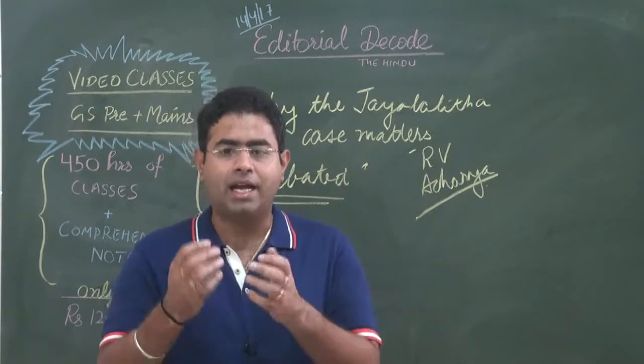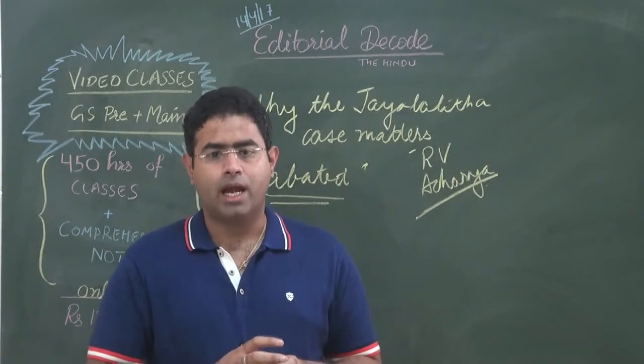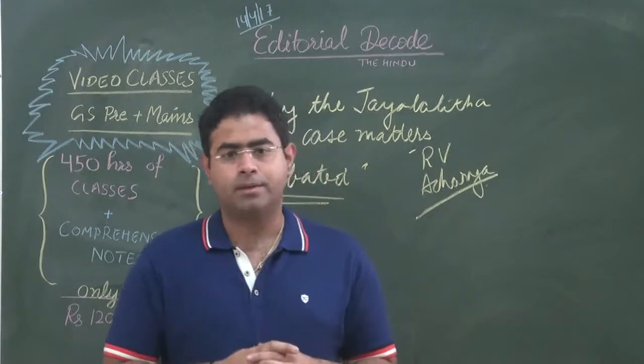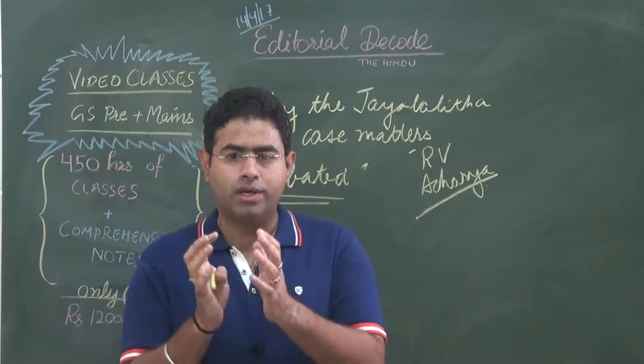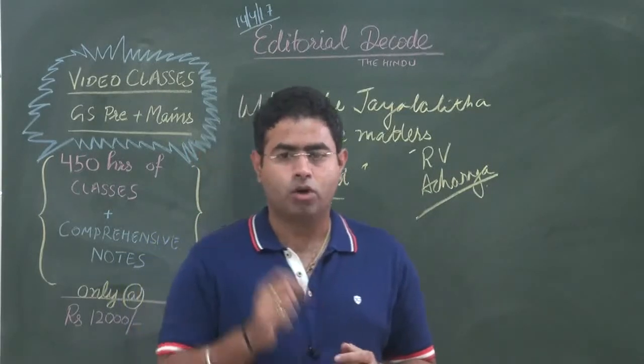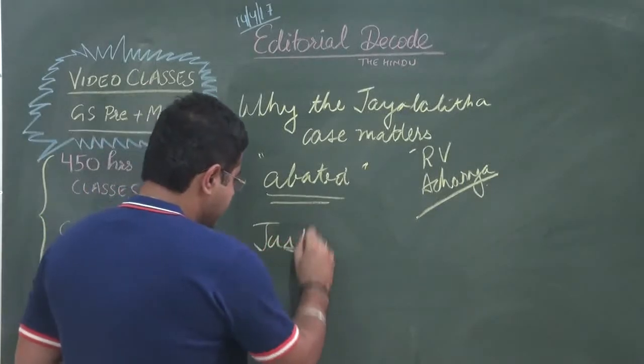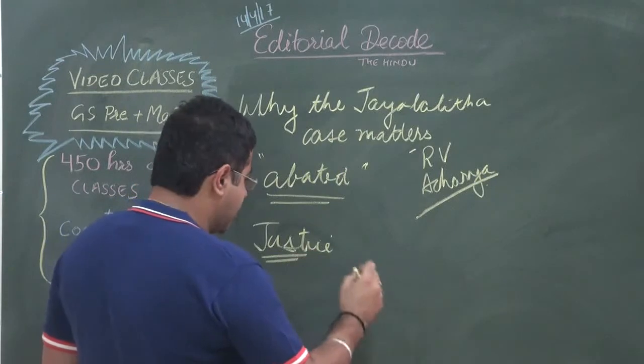the assets that were disproportionately amassed by Jayalalitha have not been taken back by the state and those assets are being enjoyed by the heirs of Jayalalitha. So in such a case, according to R.V. Acharya, the justice seems to have not been done.